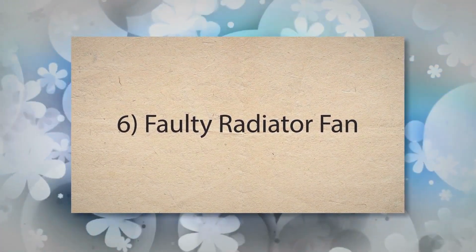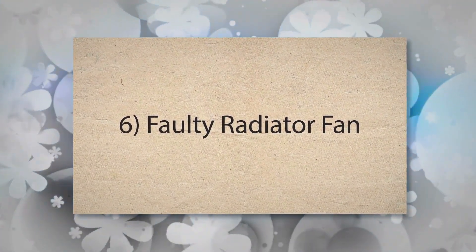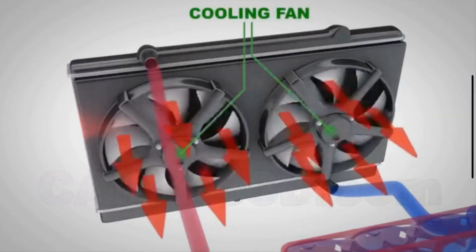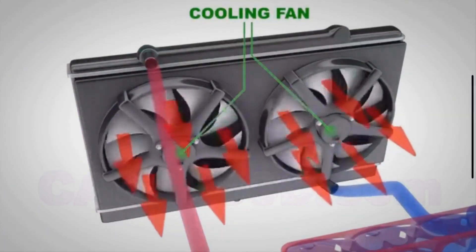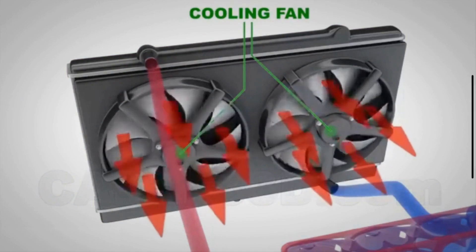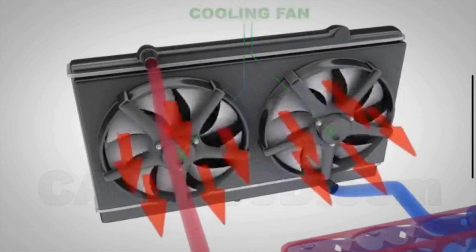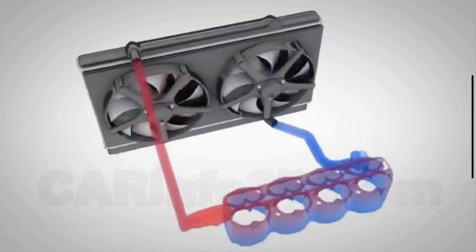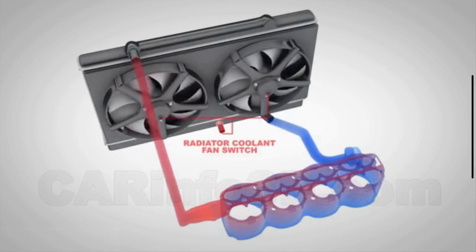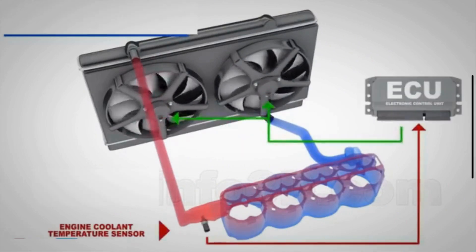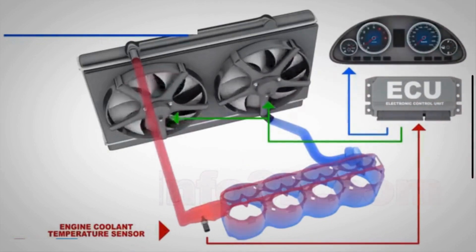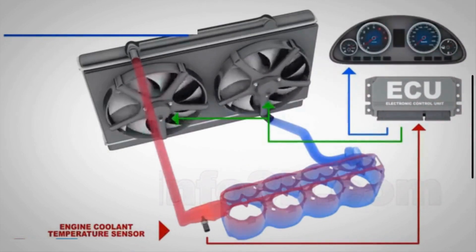6. Faulty radiator fan — the radiator fan helps to cool the coolant by drawing air through the radiator. If the fan is malfunctioning and runs continuously, it can overcool the coolant and prevent the engine from reaching its normal operating temperature. This excessive cooling can lead to the P0128 code.